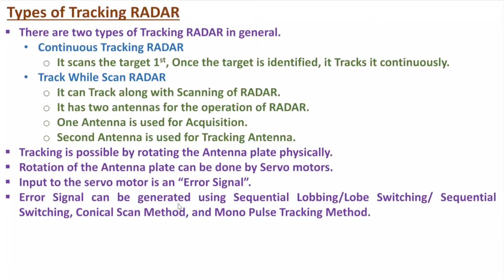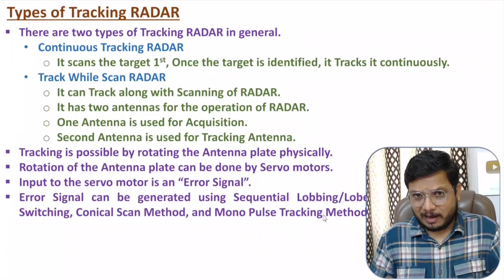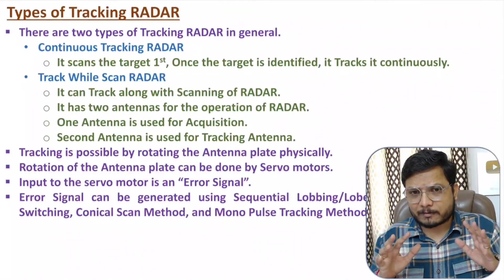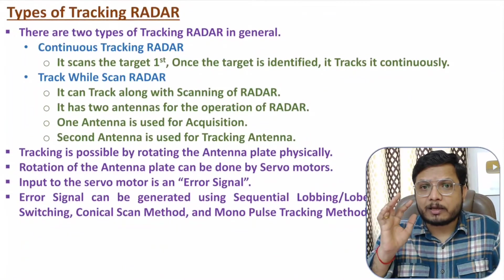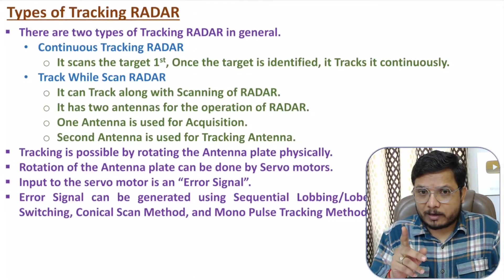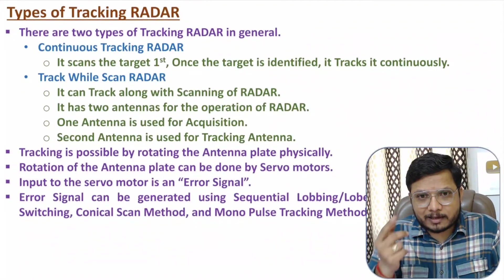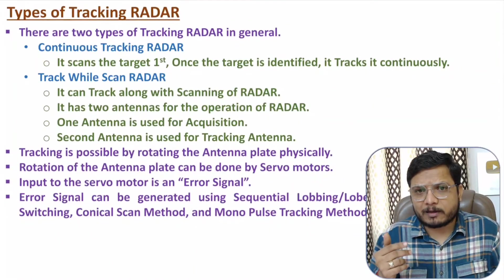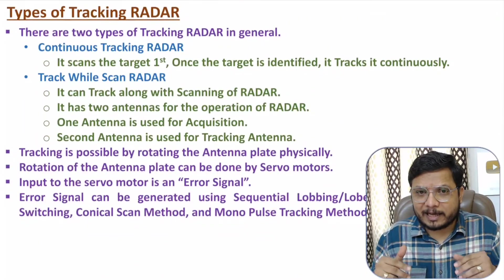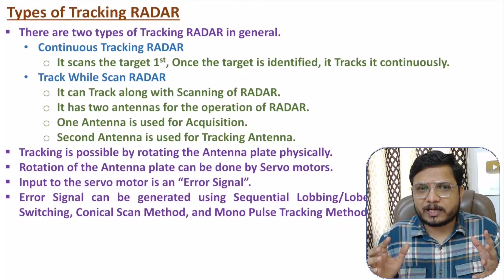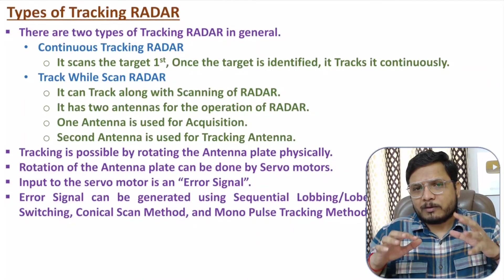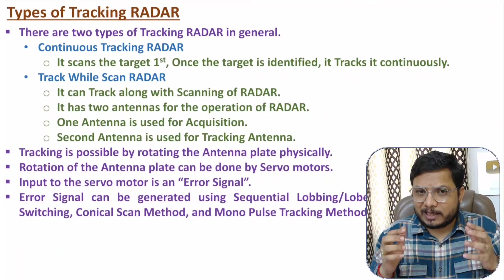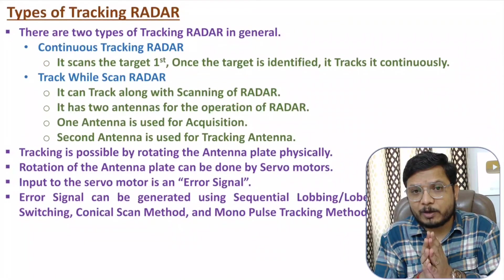Error signals can be generated using three methods: sequential lobing (also referred to as lobe switching or sequential switching), conical scan method, and monopulse tracking method. In this video lecture series, I will explain all three methods in great detail in the next coming videos. If anything is unclear, please note it in the comment section — I will be happy to help. Thank you so much for watching.